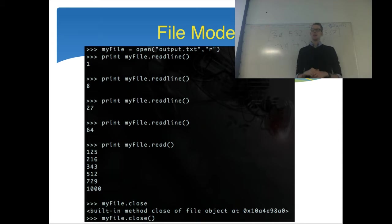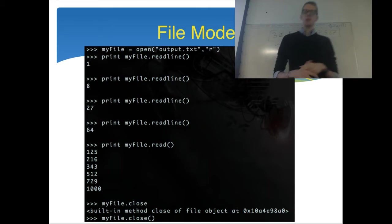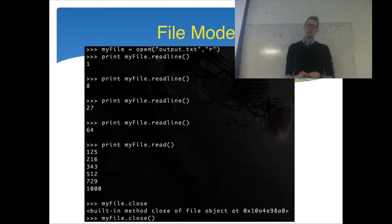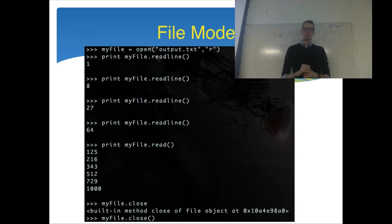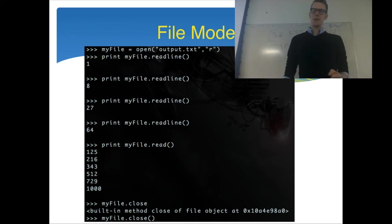Call readline a few times on your file and you'll see each line printed back. Then call .read and you'll see the rest of the file printed back — .read goes from the current position all the way to the end of the file. When you've done that, call .close. Make sure you put the brackets after close — if you don't, Python will just tell you the close method exists rather than actually running it. So readline reads a line at a time, .read reads to the end, and .close makes sure the file is closed.